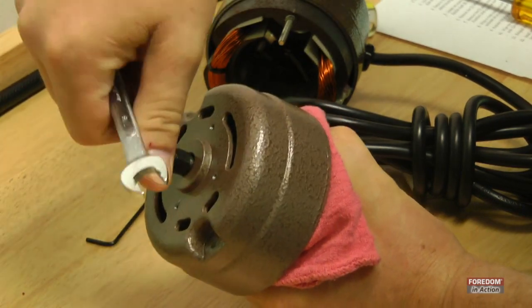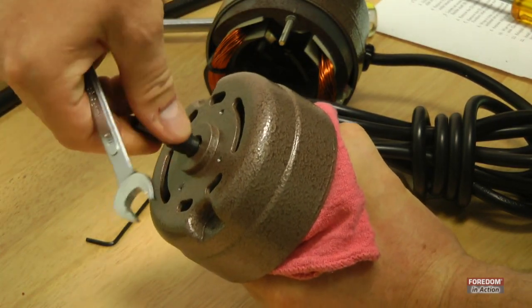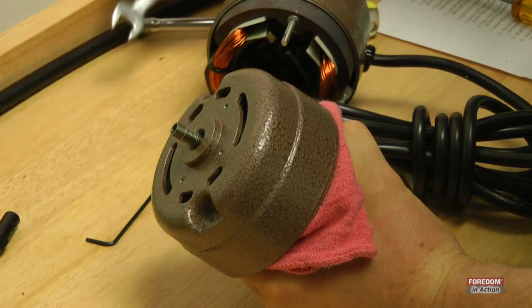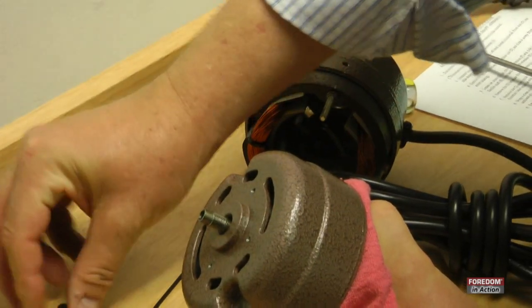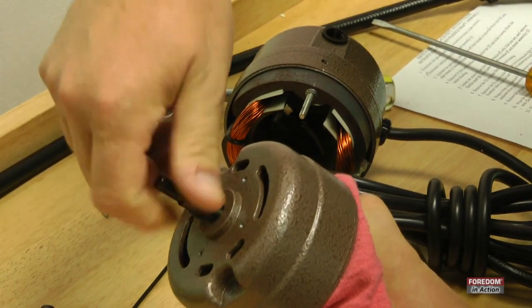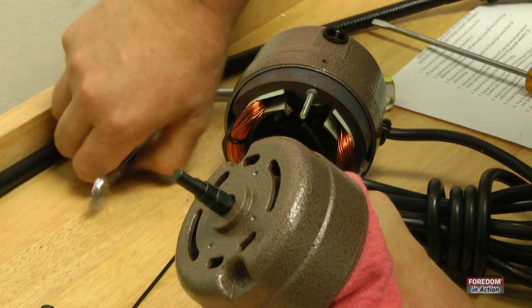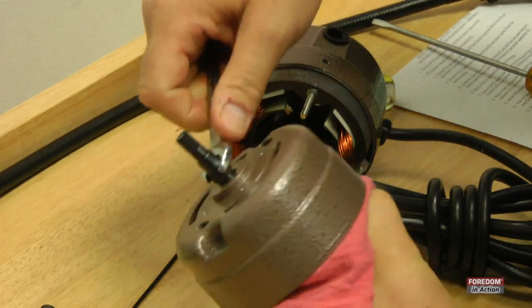Now you can turn and unscrew the old coupling. This is the old motor coupling. Replacing it with the new one. Tighten it up. Nice and snug.